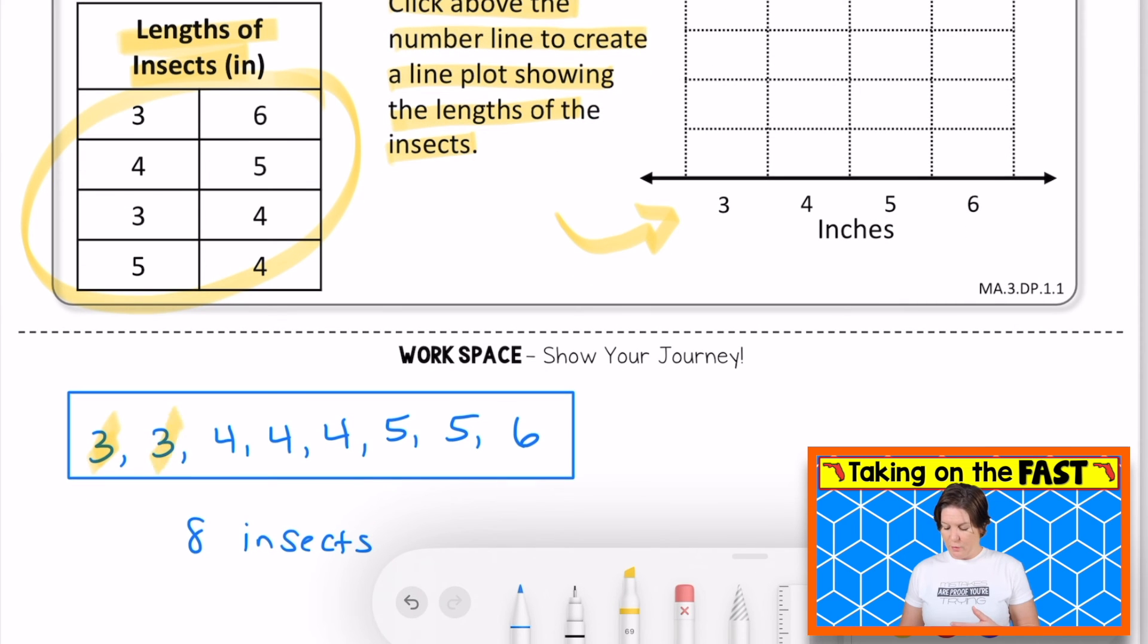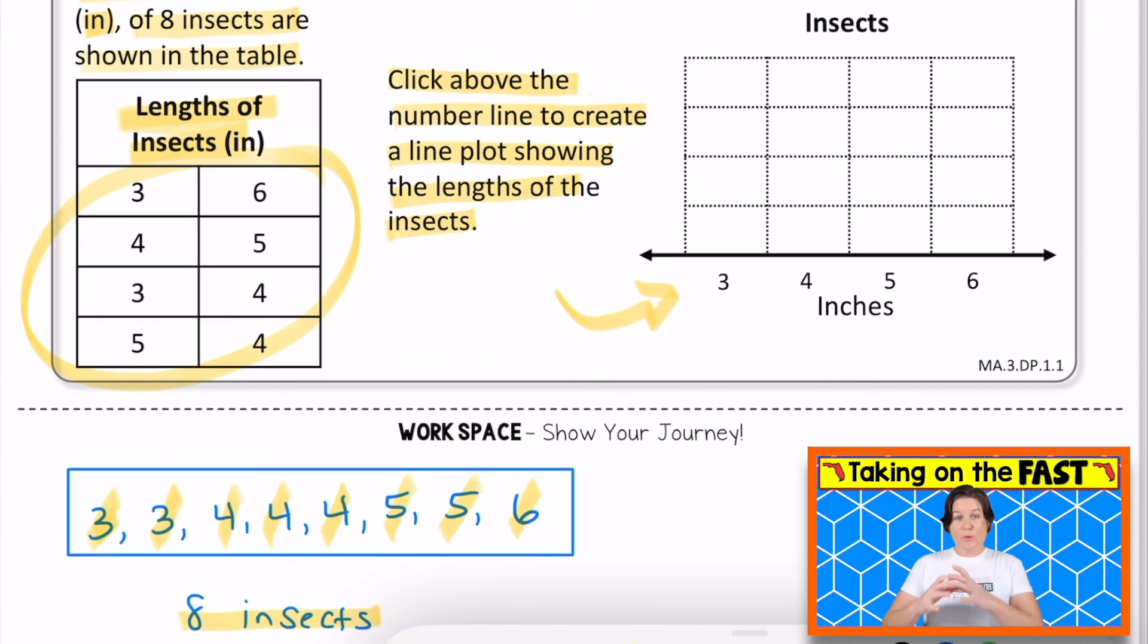So I said three, three, four, four, four, five, five, and six. And then I counted them again to make sure that there were eight insects. This is going to help me because now that it's placed in order, it makes it easy to go ahead and select my answer.